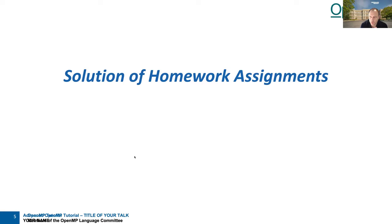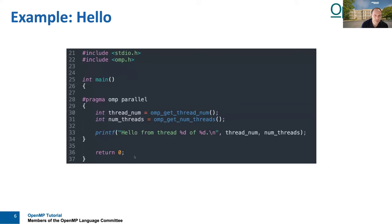If you look at the source code provided via Git, there's also a folder named 'solution', and in that you will find exactly the code I'm going to show you. I'm showing code snippets, and solutions are provided in C, C++, and Fortran. Here on the slides I only have a C solution. Task number one was to complete the hello world in OpenMP — the famous piece of code. We had a very similar hello world in the course already.